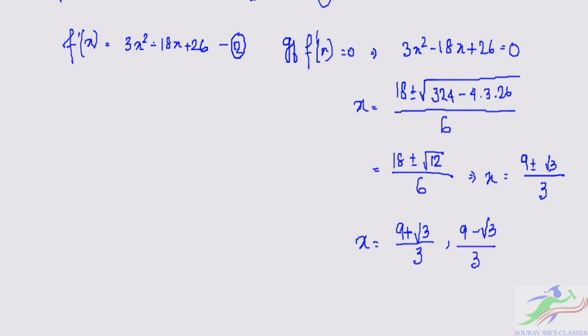These are the critical points of f(x) which don't belong to the interval [0,1]. Thus f(x) is monotonic on [0,1]. Let us check whether it is monotonically increasing or decreasing.